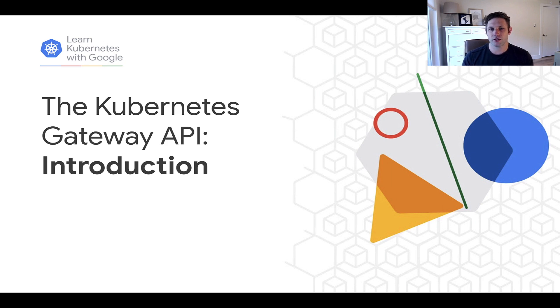The ingress and service load balancer resources are typically used for these functions today, but a new standard called the Gateway API is emerging to evolve this area of Kubernetes networking.